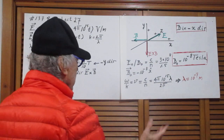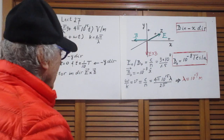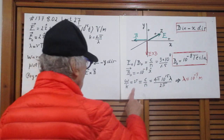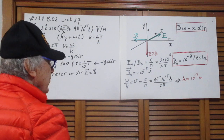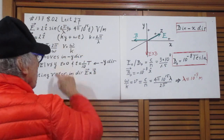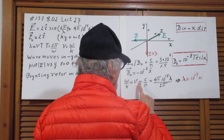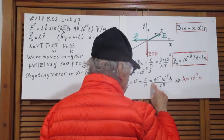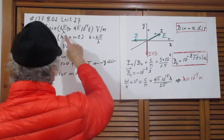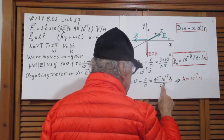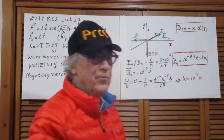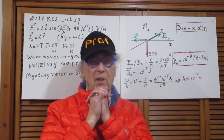Since omega / k = v = c / n, and from the given expression omega = 4π × 10¹⁵ and k = 2π / lambda, we can solve for lambda. Out pops lambda = 10⁻⁷ meters, which is one tenth of a micron.